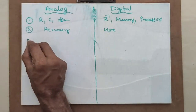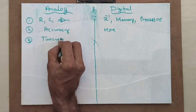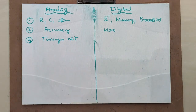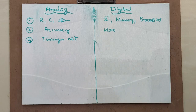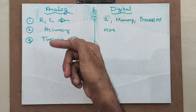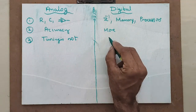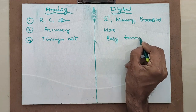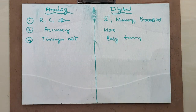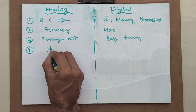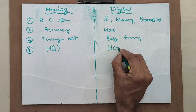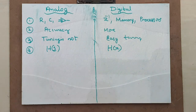The third difference is tuning. Tuning is possible in digital filters but not in analog filters. For example, if you designed an analog filter for 100 Hz and want to change it to 200 Hz, you would need to change resistor and capacitor values, which is impractical. In digital filters, you simply change the coefficients. The fourth difference: analog filters use the transfer function H(s), while digital filters use H(z), since digital filters operate in the Z-domain.